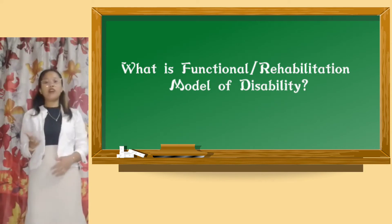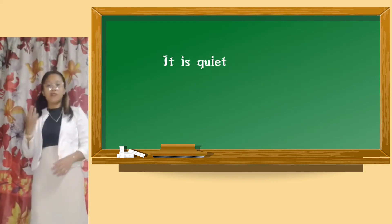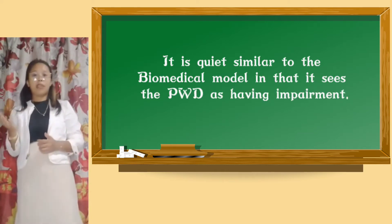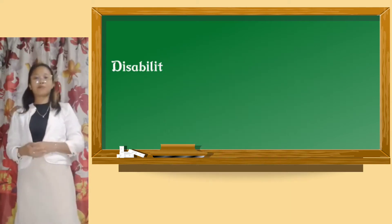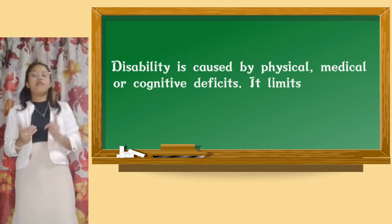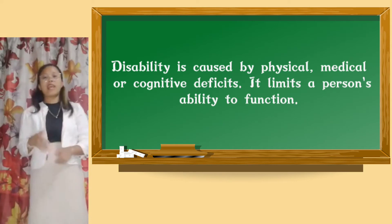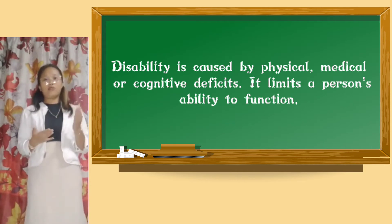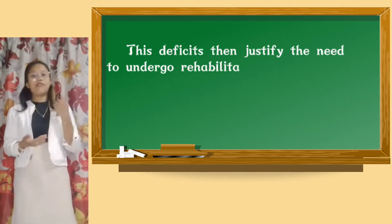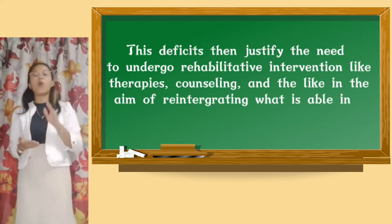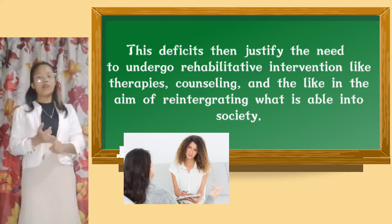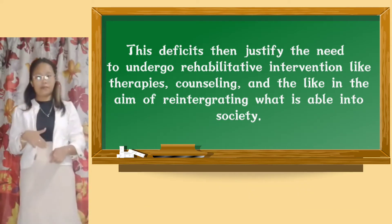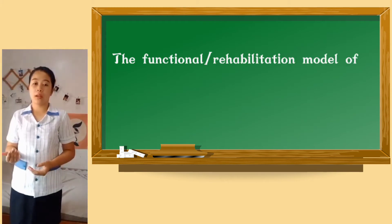What is the functional or rehabilitation model? The functional or rehabilitation model is quite similar to the biomedical model in that it sees the person with a disability as having an impairment or deficits — a disability caused by physical, medical, or cognitive deficits. The disability limits the person's functioning or ability to perform functional activities, and these deficits justify the need to undergo rehabilitative intervention like therapies, counseling, and aids for reintegrating the person into society.